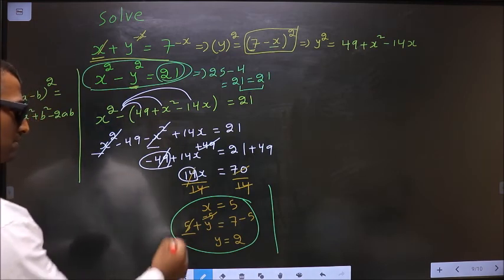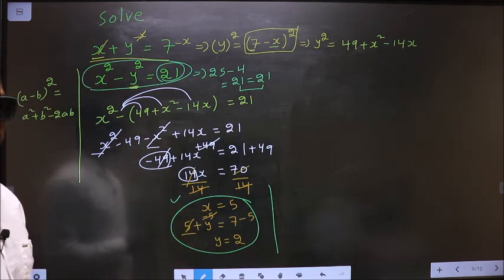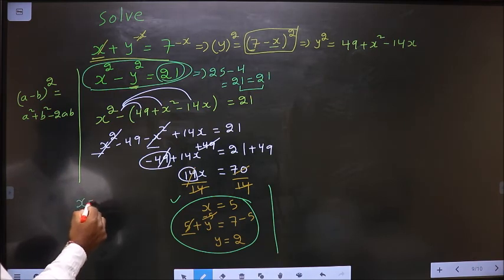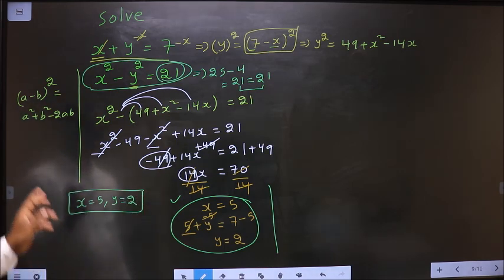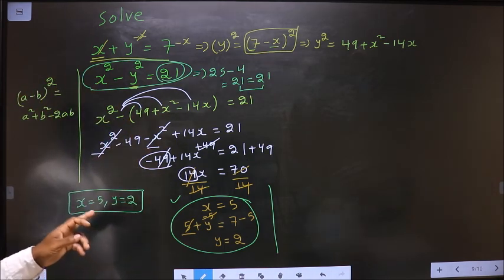That confirms this answer is correct. So finally, our answer is x is 5 and y equal to 2. This is our answer. Am I clear?